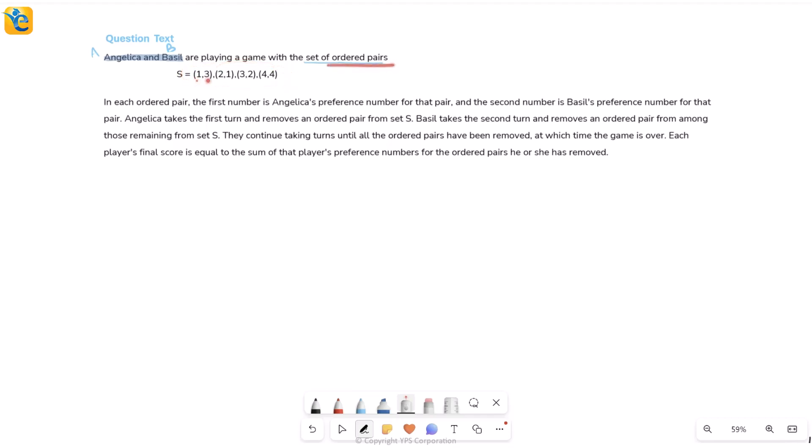An ordered pair is where the order is fixed. So 1,3 if it's written, it's not the same as just having 3,1. It really means the first number is 1 and the second number is 3. Now what is each ordered pair signifying? That's what we read further.